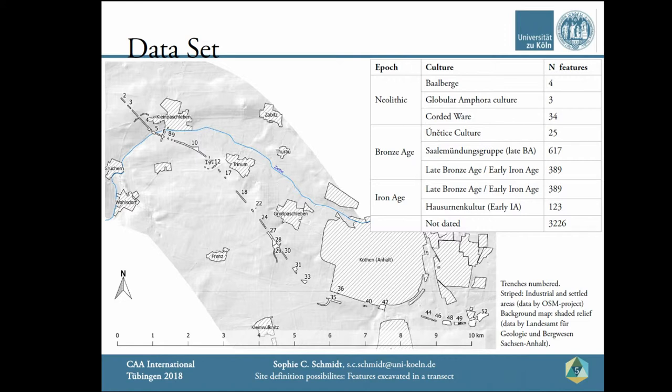It was not built with an archaeological research question in mind, so I dare to say it is a random sample of the archaeological record. Nonetheless, we must note that the number of undated features is high in relation to the dated features — 66% of the features could not be dated precisely. Therefore, I am working with a subsample of about 34% of the features inside the transect, and this subsample most probably is not random, as the identification probabilities of different periods may vary.